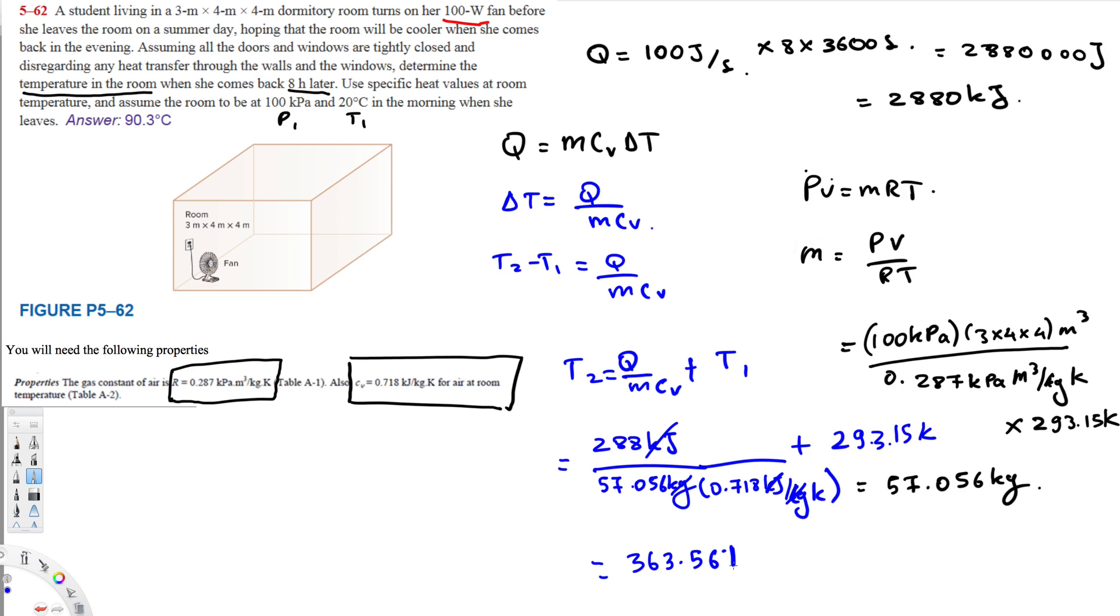If you convert this into degrees Celsius, all you have to do is subtract 273.15. If you subtract that value, you get 90.41 degrees Celsius. That's how we do this kind of problem. So the final answer is 90.41 degrees Celsius.